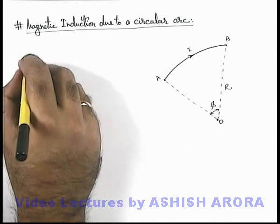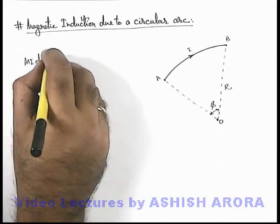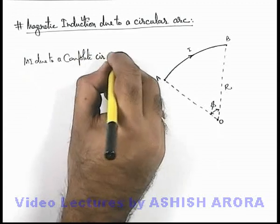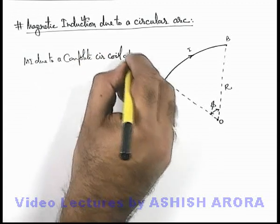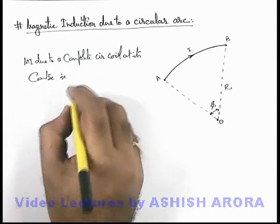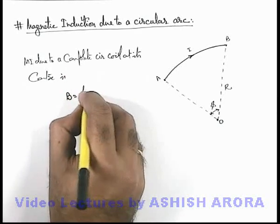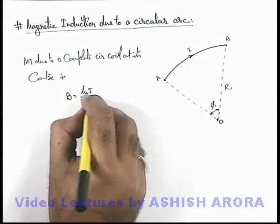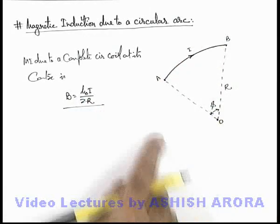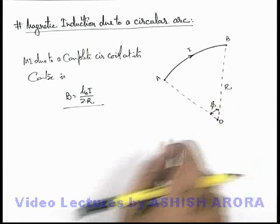We know well that magnetic induction due to a complete circular coil at its center is given by B equals mu not i by 2r, which is due to the complete angle 2 pi subtended by the coil at the center.